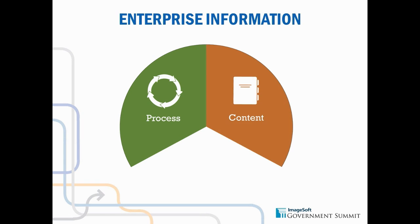The second core component is the content — the actual information, the documents that you use to drive your process. In the paper world, this is represented as paper case files, paper documents, the items that come in the door. Usually, to distribute those amongst multiple people, you have to create copies, which is inefficient, or you have to go and search out that particular piece of paper, which can only really be in one place at a time when it's the official record.